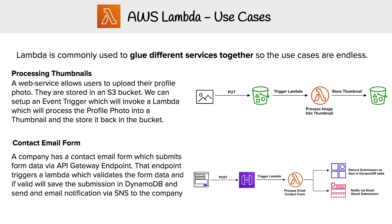If the data is good, it's going to create a record in our DynamoDB table — records in DynamoDB are called items. It's also going to send out an email notification to the company via SNS, so that we know you've contacted us.